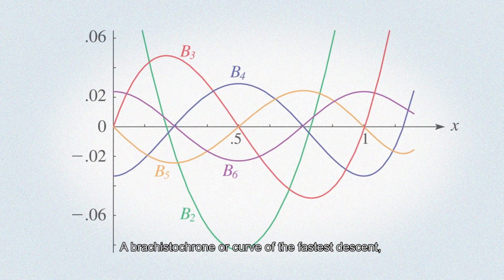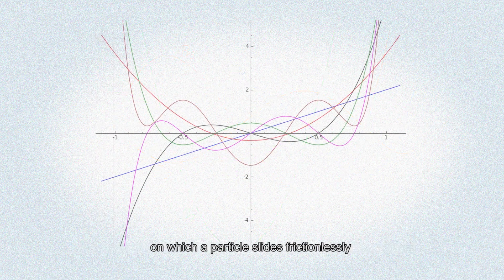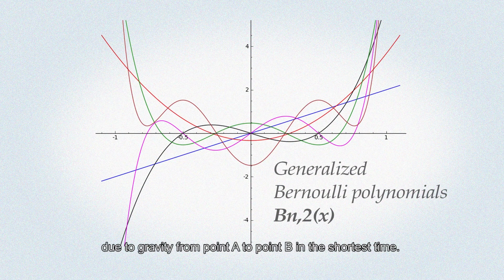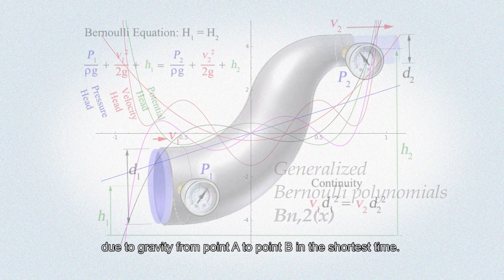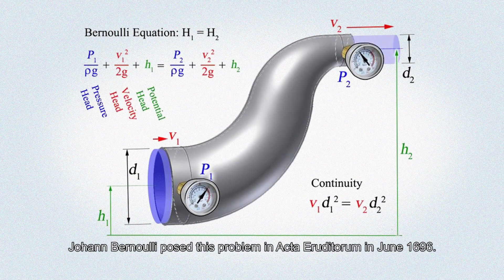A brachistochrone, or curve of the fastest descent, is a curve lying on the vertical plane between two points A and B, on which a particle slides frictionlessly due to gravity from point A to point B in the shortest time. Johann Bernoulli posed this problem in Acta Eruditorum in June 1696.